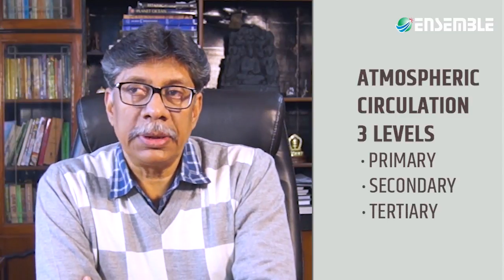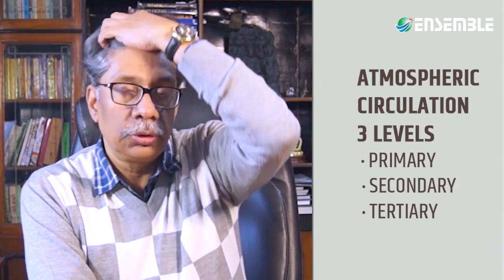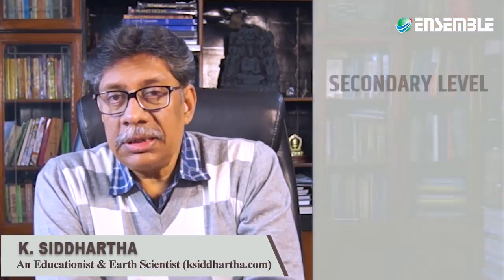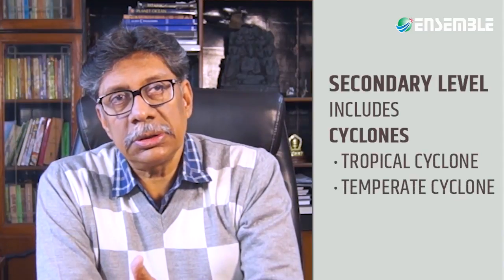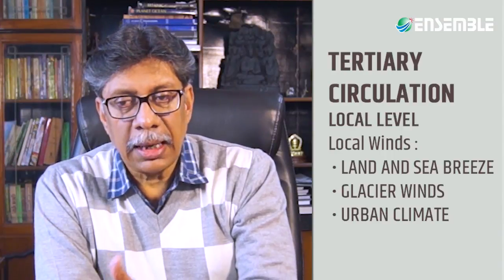There are three forms of atmospheric circulation. The first takes place at the primary level, called planetary wind belts or planetary circulation or global circulation. The second is secondary atmospheric circulation, which includes cyclones and anti-cyclones — including tropical cyclones and temperate cyclones. At the third level lies tertiary atmospheric circulation, which includes components associated with local winds, urban heat exchange, thunderstorms, and tornadoes.